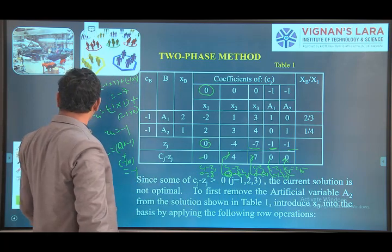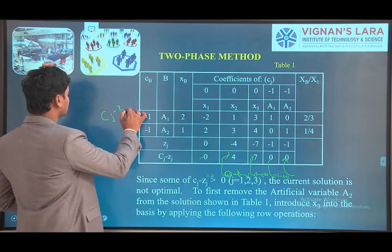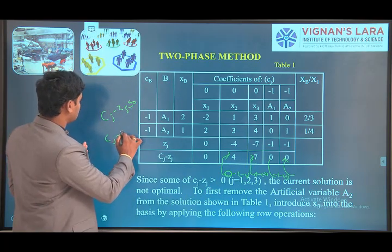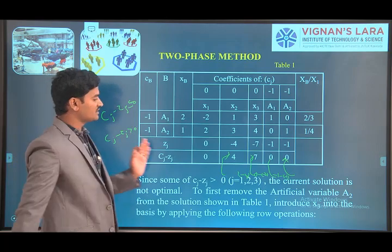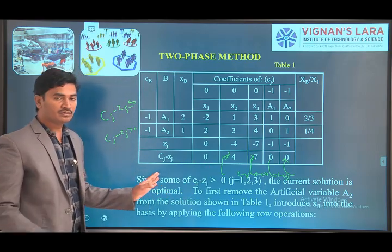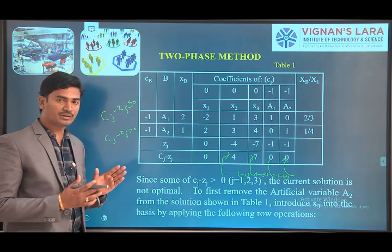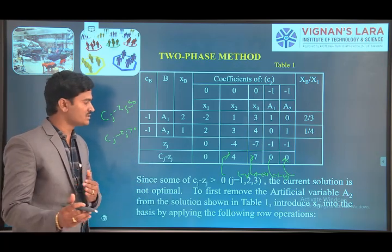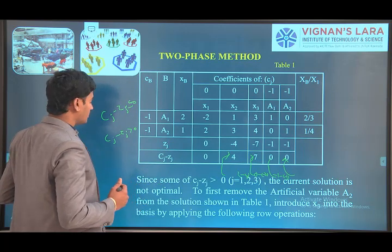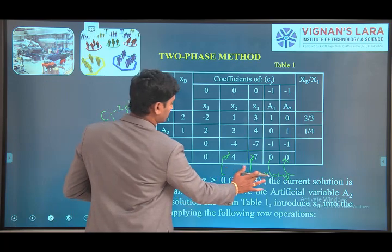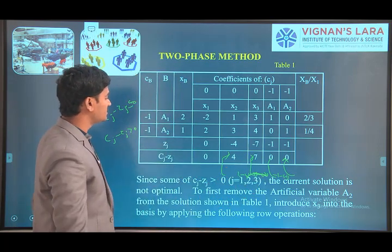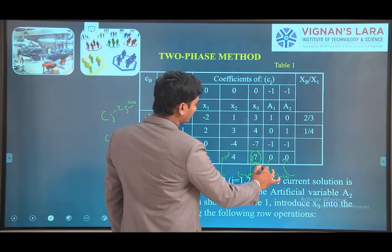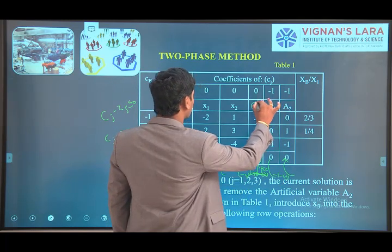The condition cj − zj ≤ 0 is not satisfied here, because we have two columns where cj − zj > 0. So the current solution is not optimal, and we need to do further iterations. The maximum value of cj − zj is 7, so that particular column is the key column, and x3 is the entering variable.